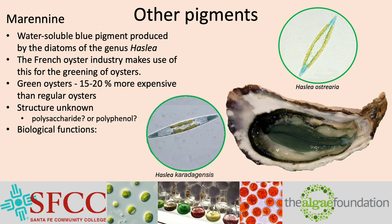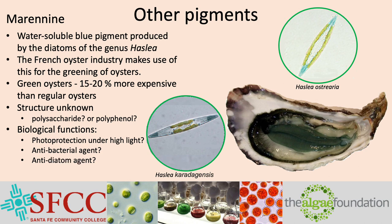Some proposed biological functions for marennine include photoprotection, or protection of the photosynthetic machinery under high light. It could be an antibacterial agent, potentially protecting oysters from infection. It would also be an anti-diatom agent, so Haslea could lower the number of competitors in the environment. There is still much to learn about algae.